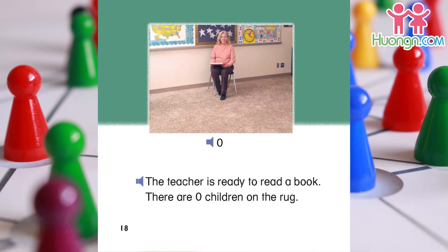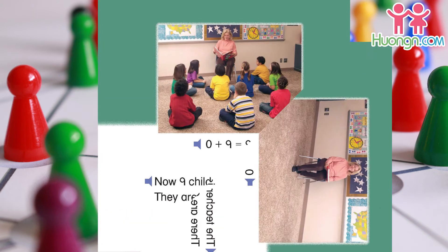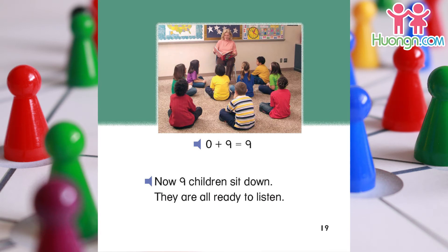The teacher is ready to read a book. There are zero children on the rug. Now nine children sit down. They are all ready to listen. Zero plus nine equals nine.